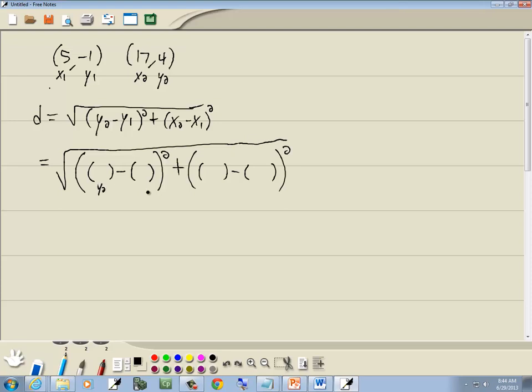And remember, this is y2, y1. This is x2, and this is x1. Now, y2 we said was 4. y1 is negative 1. x2 is 17, and x1 is 5.